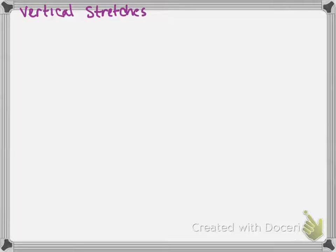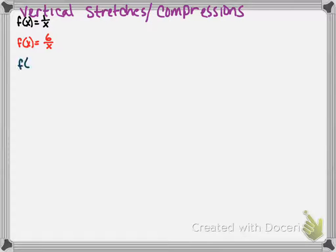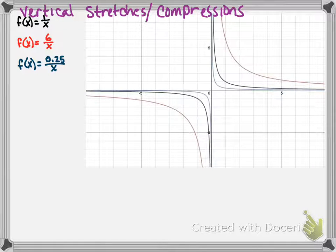Now we're going to start looking at transformations. These are the same transformations we've looked at all year long with different functions. Vertical stretches and compressions: always using f of x equals 1 over x as my starting point, I could have f of x equals 6 over x or f of x equals 0.25 over x. The graphs of these three color-coded are shown here.